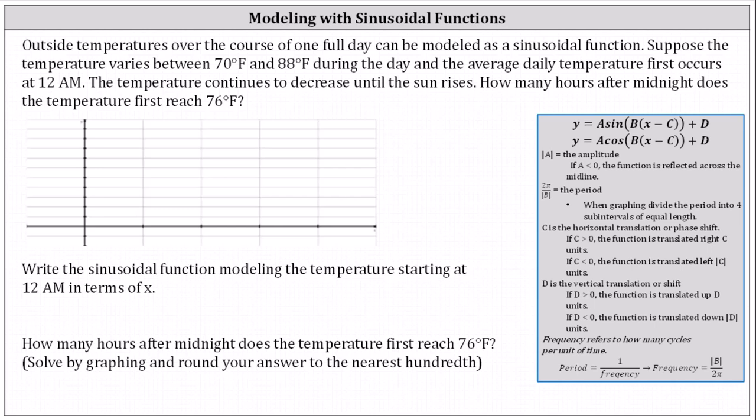Let's begin working on graphing the function as well as determining the equation for the function. To begin, let's find the average daily temperature by averaging 70 and 88 degrees Fahrenheit. The sum of 70 and 88 divided by 2 is equal to 79, which means at 12 a.m. the temperature is 79 degrees, which is also the midline for the graph.